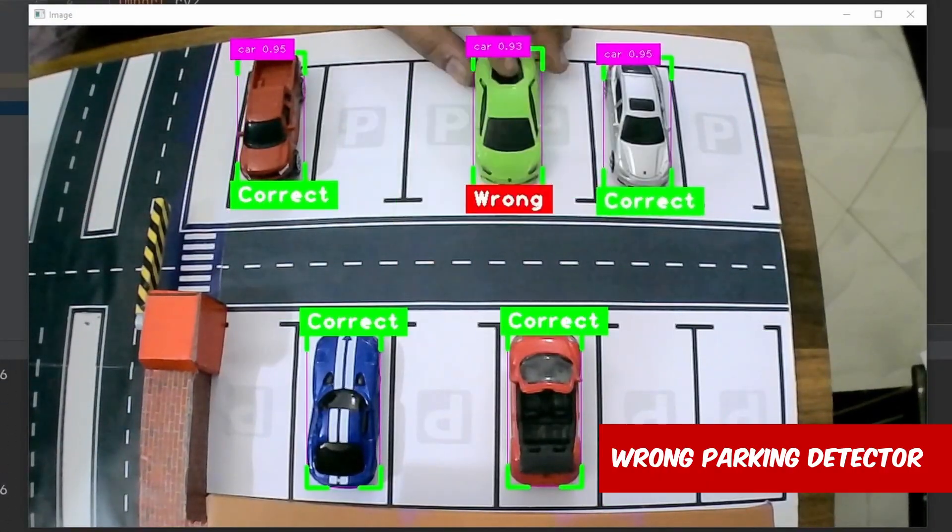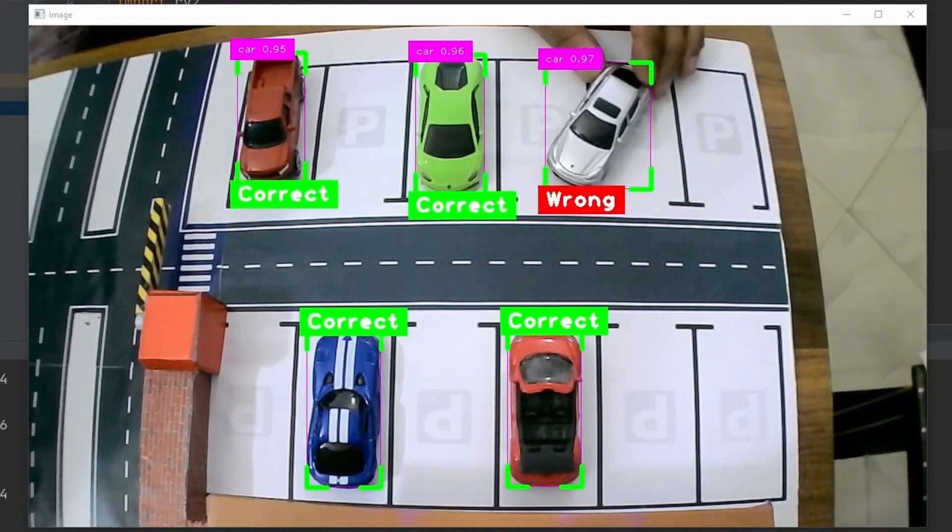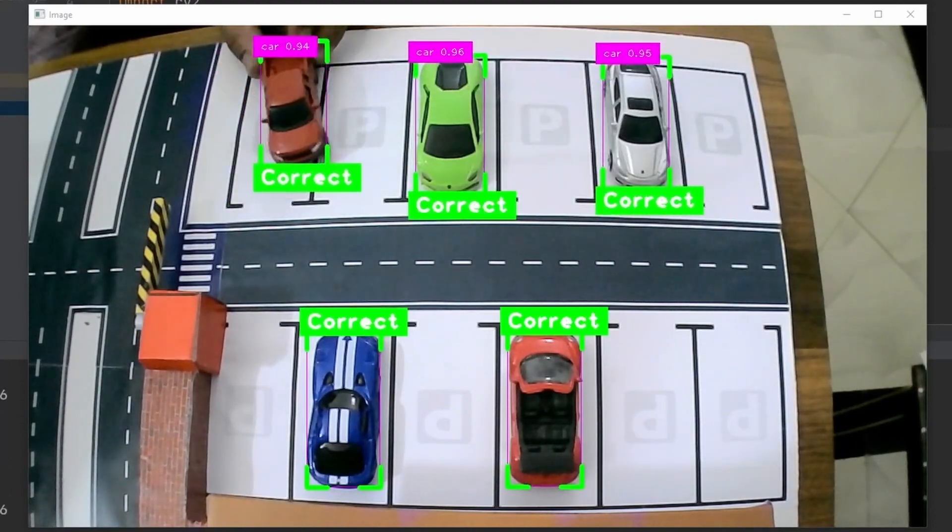Wrong parking detector. Here we will guide you on how to set up a system that checks parking alignments. If a car is parked wrong, you will be the first one to know.